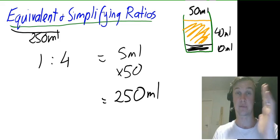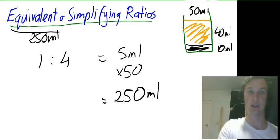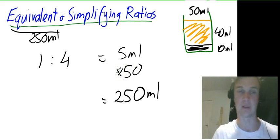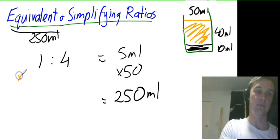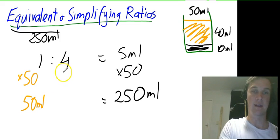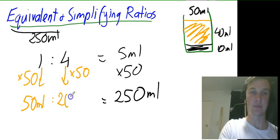But in this case that's multiplying the first ratio by the second ratio. In this case we're going to do times by 50. So if I times 1 by 50 I got 50 ml. And then if I times 4 by 50 I got 200 ml.